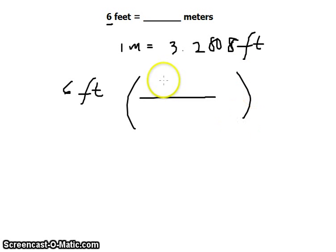6 feet, multiply it by the conversion factor. So what would you write in the numerator and denominator?